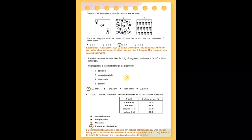Which method is used to separate a mixture of the following liquids? The liquids given are: methanol with boiling point 64.5°C, ethanol 78.5°C, propanol 97.2°C, and butanol 117°C. This method is fractional distillation. Fractional distillation is used to separate any solution containing liquids with different boiling points — for example, ethanol distills over at 78.5°C, then rises to 100°C, and the two liquids can be collected separately.